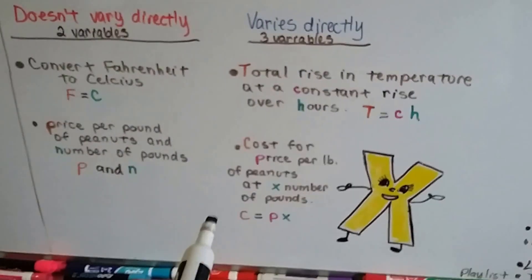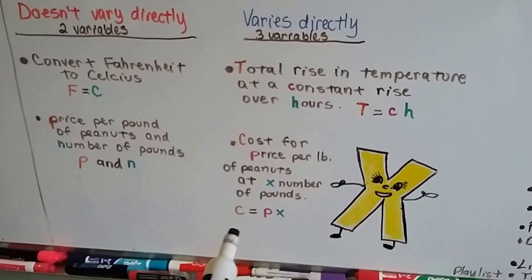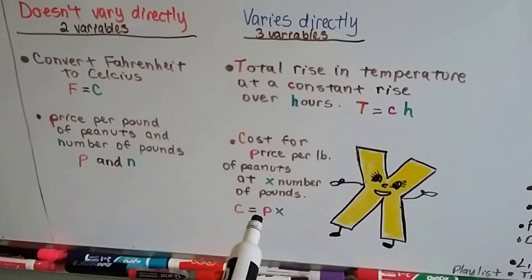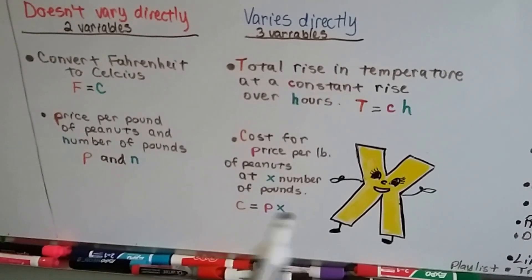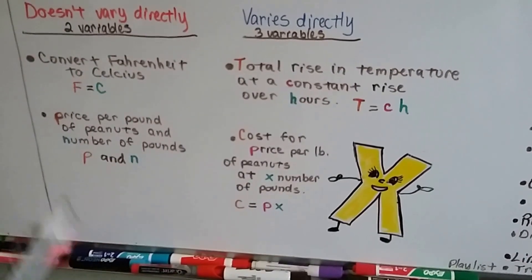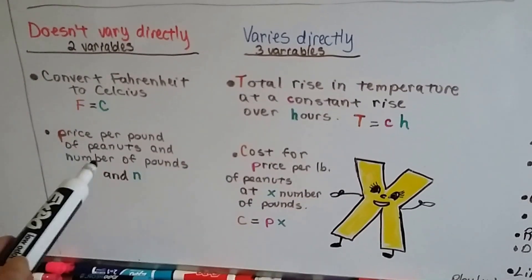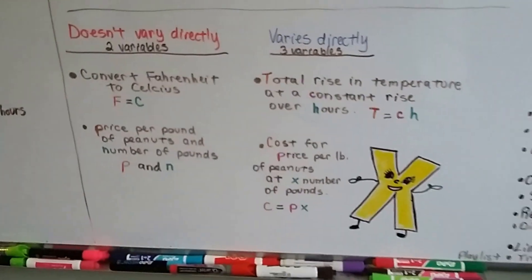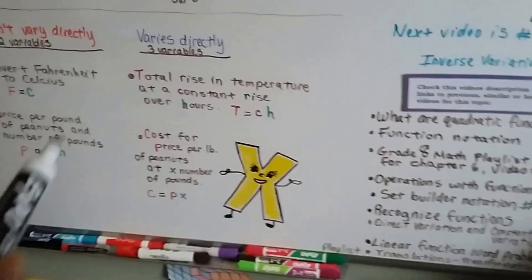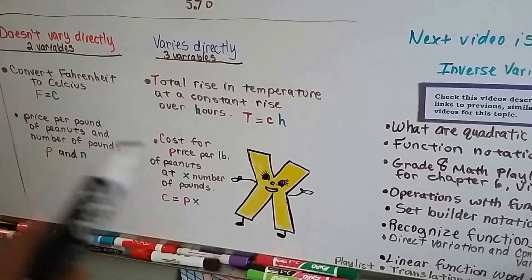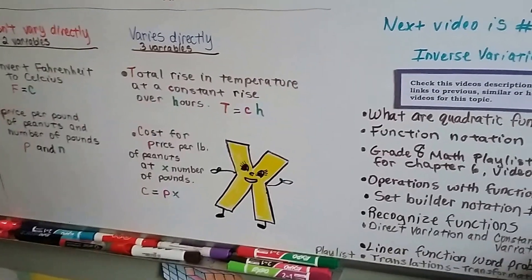It doesn't say what is the total cost of peanuts at $2. It's just saying the peanuts are this much and this is how many pounds. So we've only got two variables here. But if it said what is the cost for price per pound of peanuts at X number of pounds, now we've got the cost and the price per pounds and the number of pounds. Now we've got three variables. If they just added total cost onto here, then we would have had a third variable. I know it's confusing.